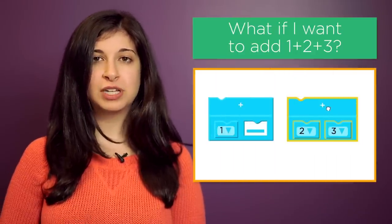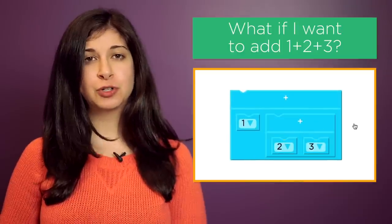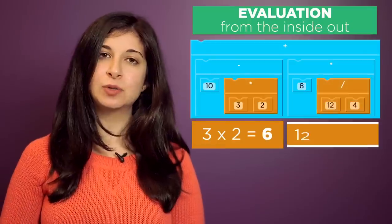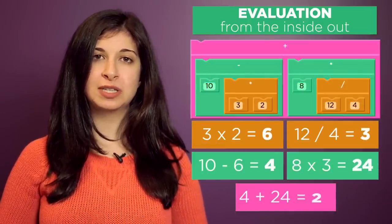So to add one plus two plus three, we can drop in an additional block for two plus three. When the computer evaluates your blocks, it starts from the inside out, evaluating each nested block before it moves out to the next level.